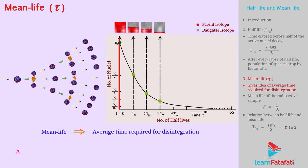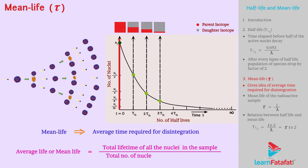So, we define the average life or mean life of a radioactive sample as the total lifetime of all the nuclei in the sample divided by the total number of nuclei present in the sample.